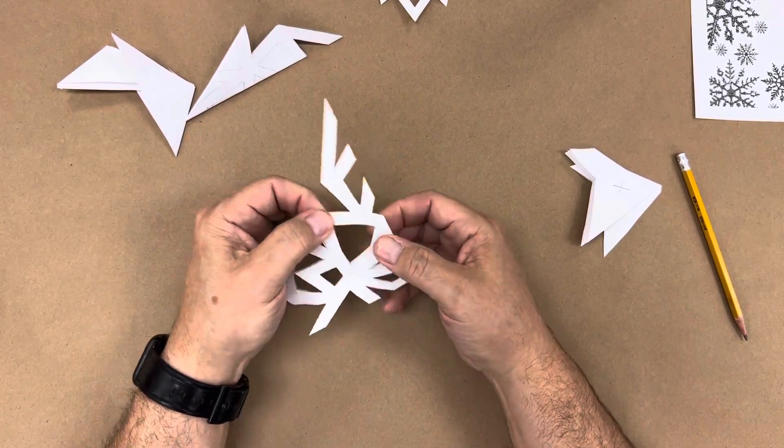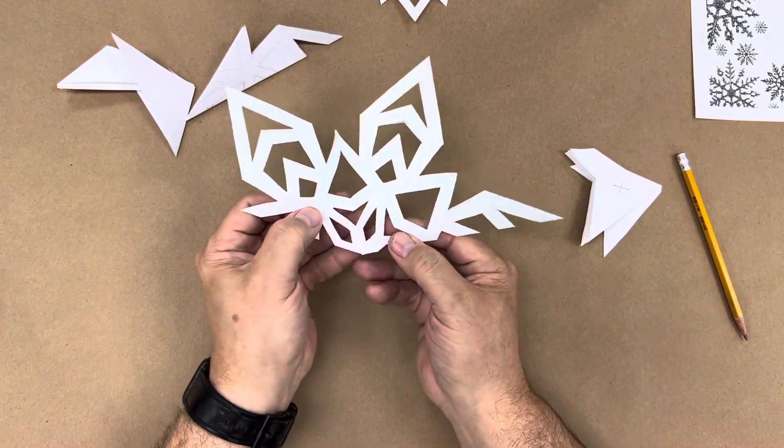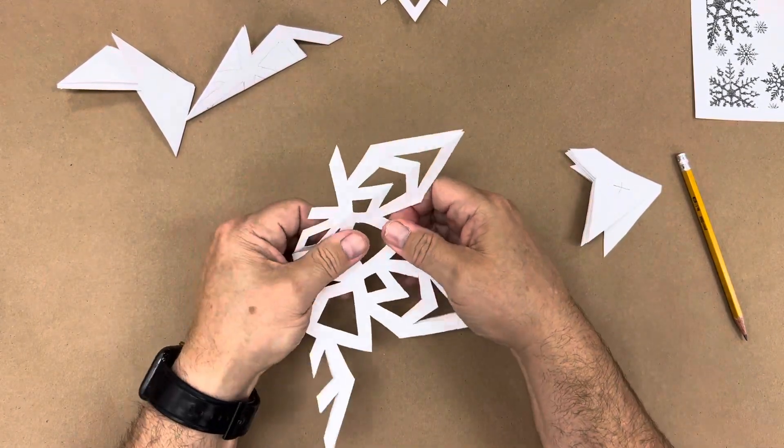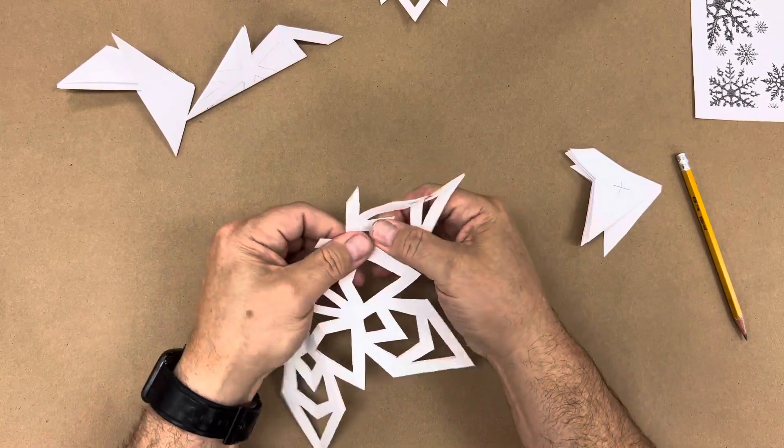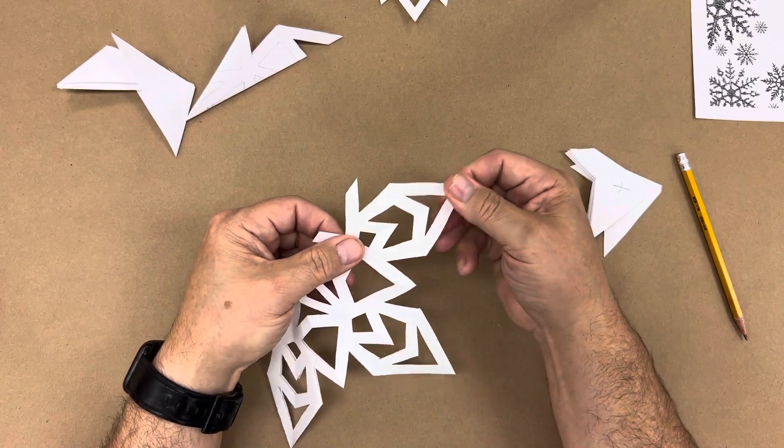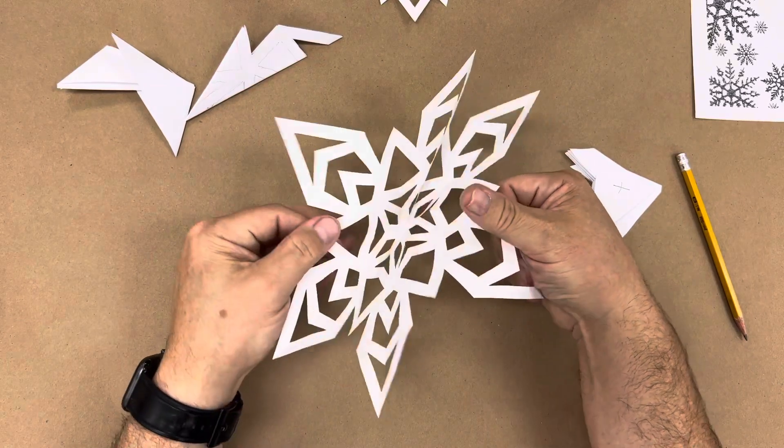So again, along the angles, I open it. And then I press down on those angles. Do it again. Press down on the angles. There's another fold. Open that up. Little by little. Press down. And then we open up our final snowflake.